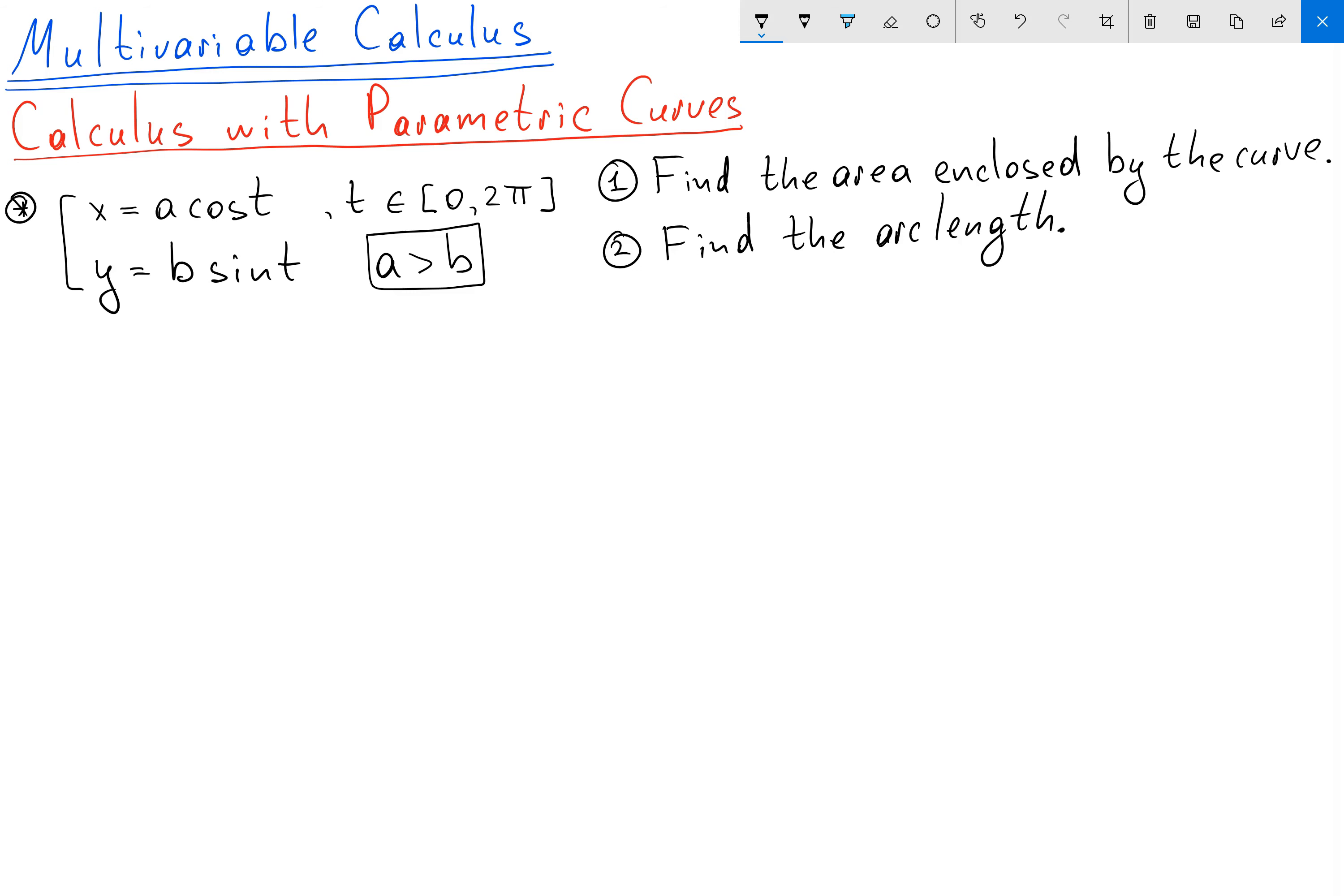Hello everyone. In this video I want to discuss multivariable calculus and calculus with parametric curves. So let's say we're given parametric equations x equals a cosine t, y equals b sine t, and I want to answer two questions.